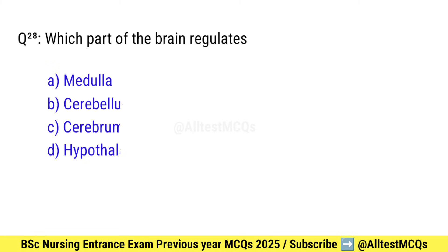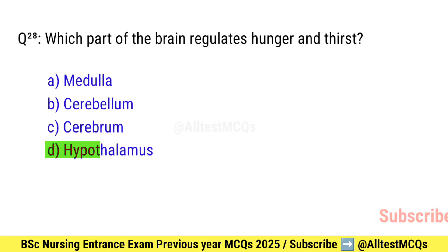Question number 28. Which part of the brain regulates hunger and thirst? Right option is D: Hypothalamus.